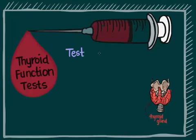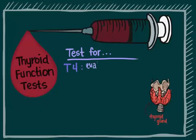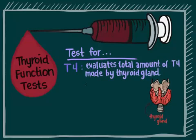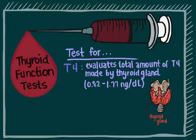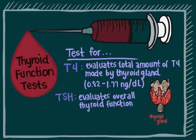Thyroid hormone T4 levels and thyroid stimulating hormone or TSH levels are usually tested. The T4 levels are measured to evaluate the total amount of T4 made by the thyroid gland; the normal amount is 0.82 to 1.77 nanograms per deciliter. TSH levels are used to evaluate overall thyroid function; the normal level is 0.45 to 4.5 microunits per mL.